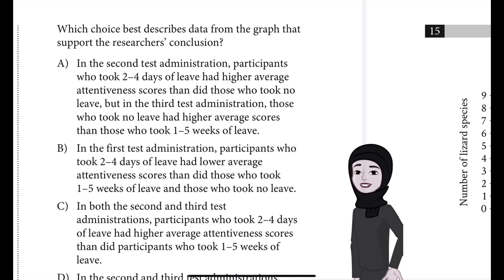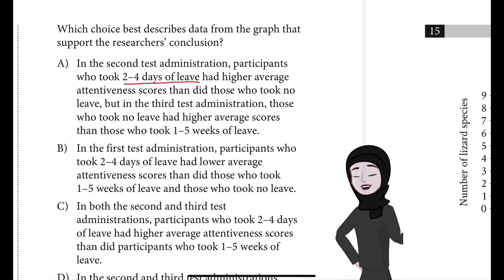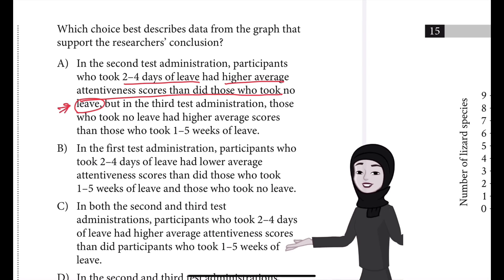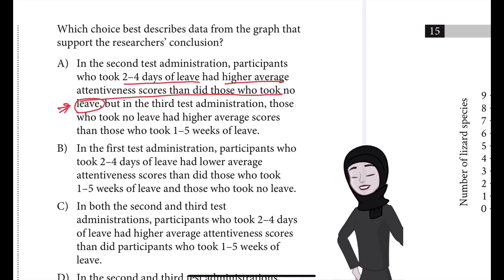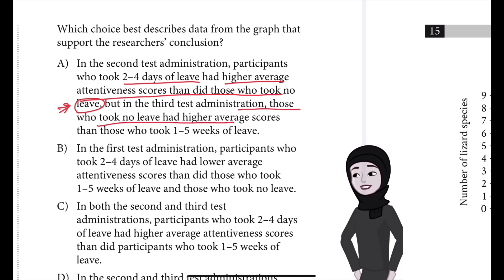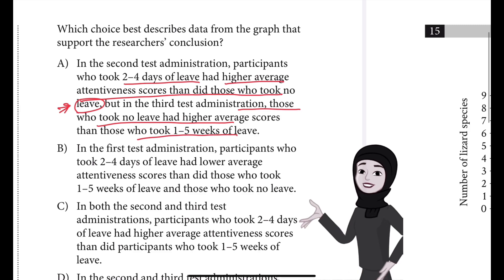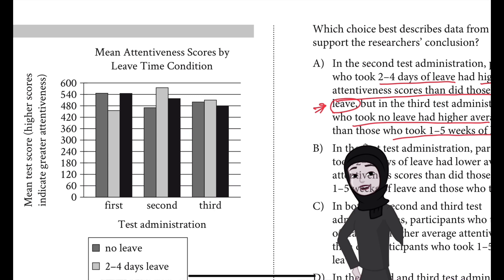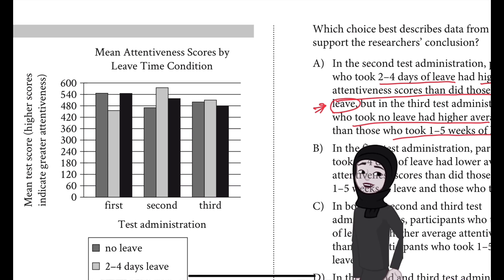In answer choice A, it is talking about two to four days of leave having higher average attentiveness than those who took no leave. The researchers are not comparing that — their conclusion is not related to those who took no leave. The other part of the answer mentions those who took no leave had higher average scores than those who took one to five weeks of leave. What is mentioned may be correct in the graph, but it is not related to what the researchers have concluded.